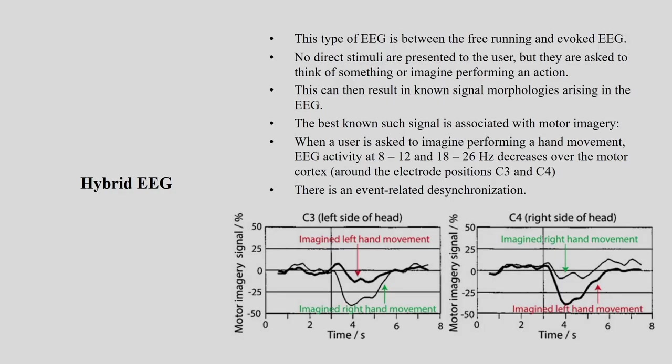Hybrid EEG can result in known signal morphologies arising in the EEG. The best-known signal is associated with motor activity — for example, being asked to imagine moving the right or left hand. When a user is asked to imagine performing a hand movement, EEG activity at 8–12 Hz and 18–26 Hz decreases over the motor cortex (C3 and C4) — this is an event-related desynchronization.